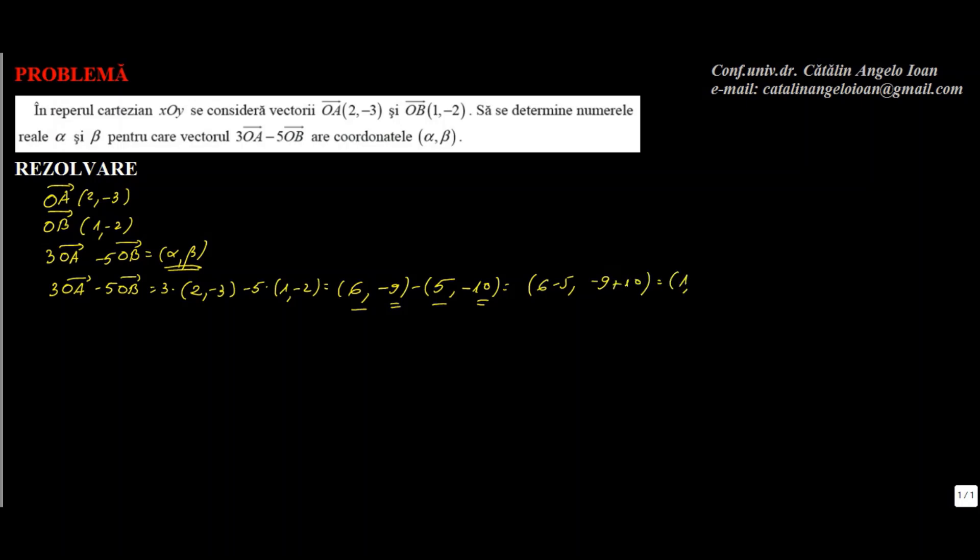Adică 1 și 1. Prin urmare această pereche trebuia să fie egală cu alfa, beta. Deci rezultă alfa egal cu prima, beta egal cu 1. Și astfel problema este încheiată.